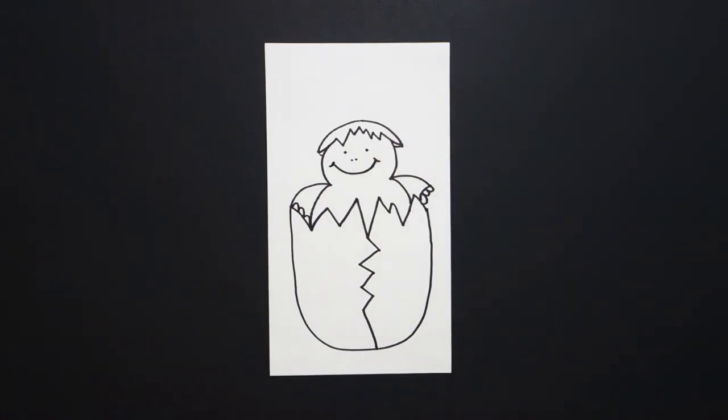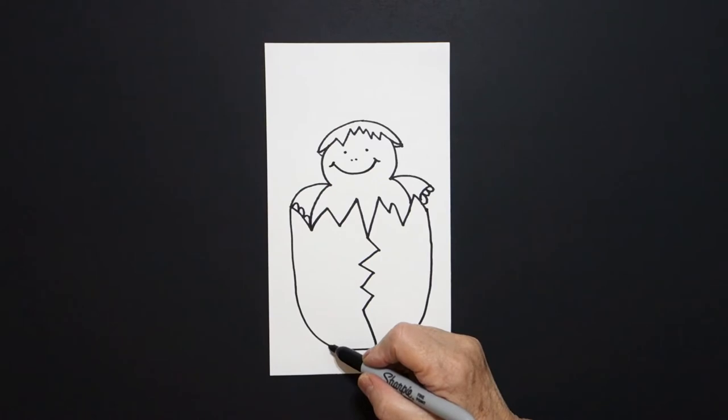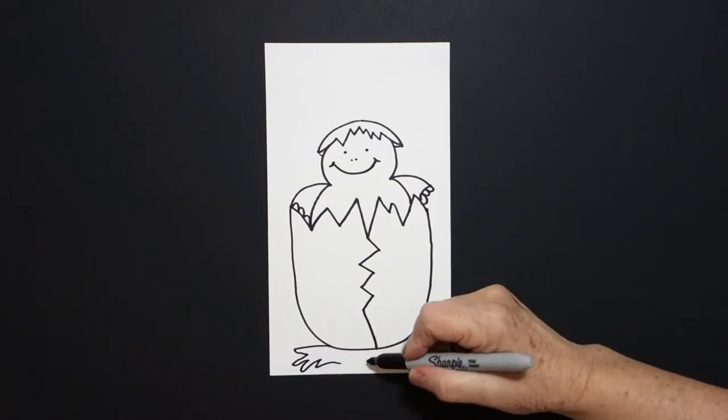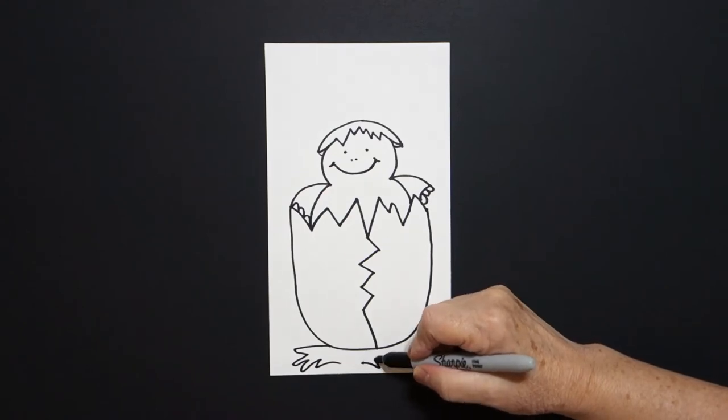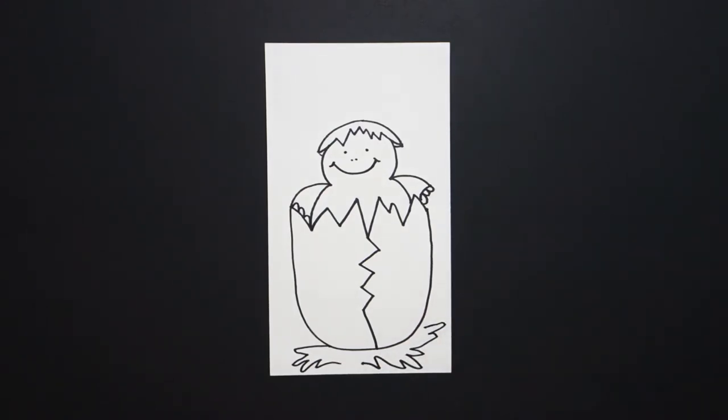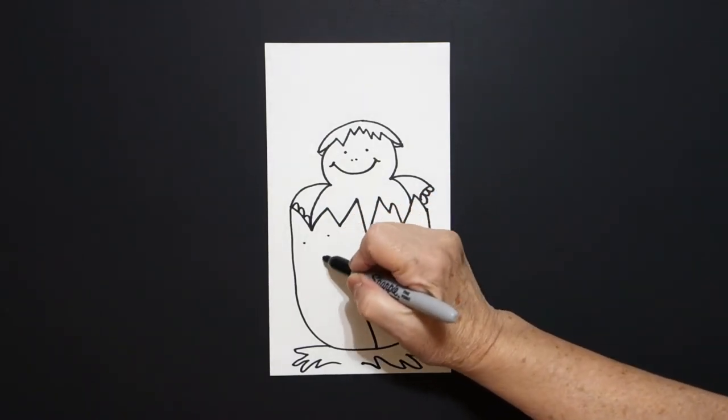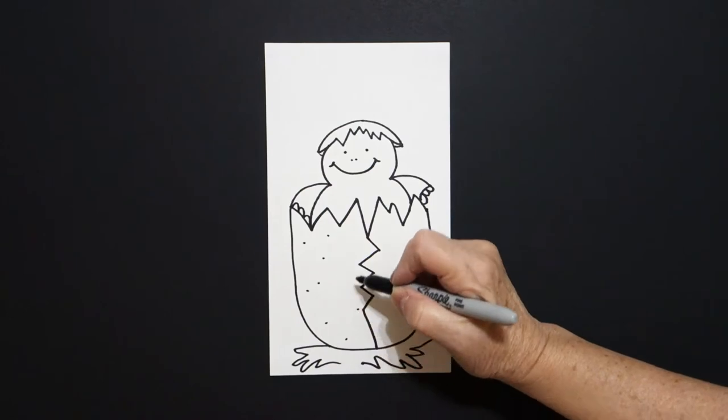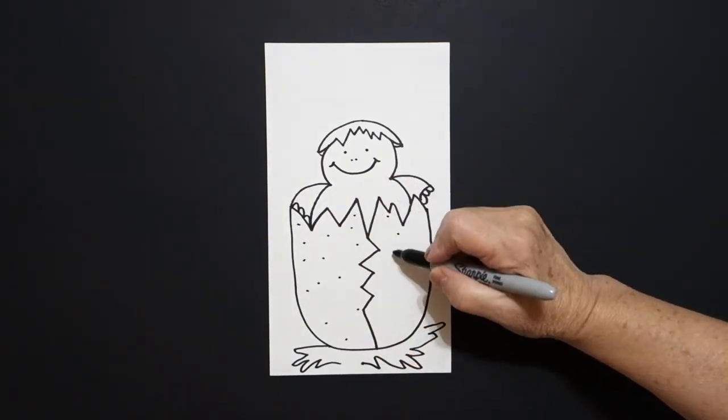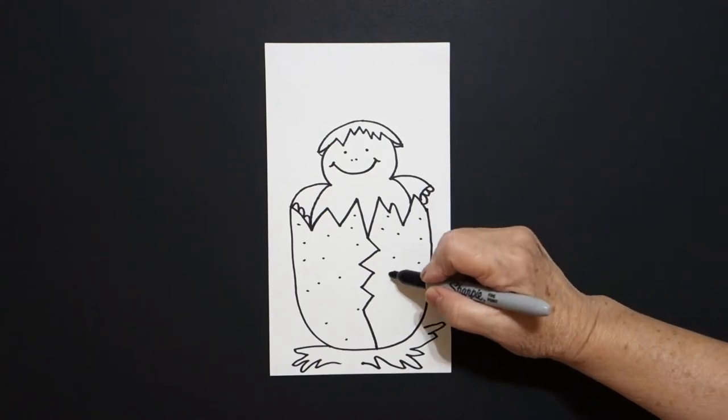I come down here at the bottom and I go wavy wavy wavy wavy line, leave it floating, wavy wavy wavy wavy line, and leave it floating also. Inside I'm going to put some little black dots on the left and on the right.